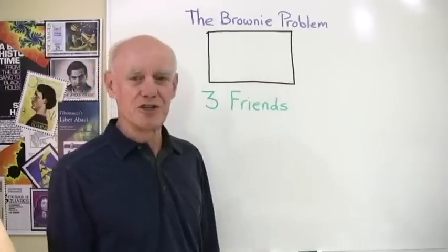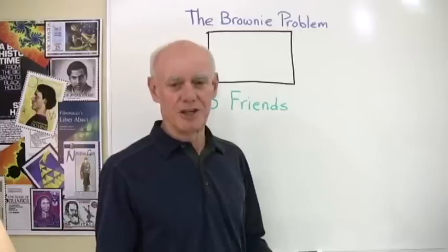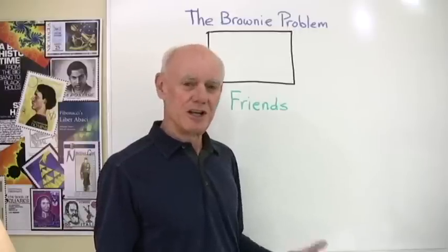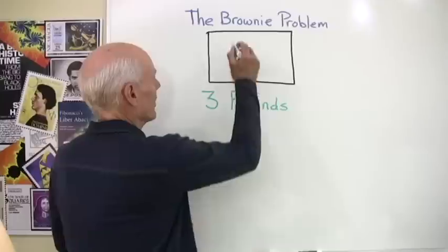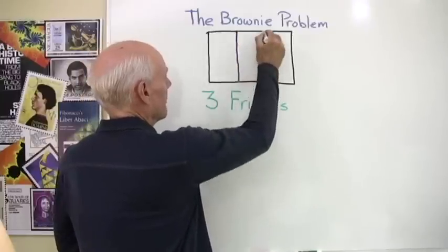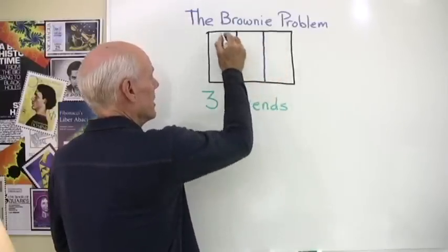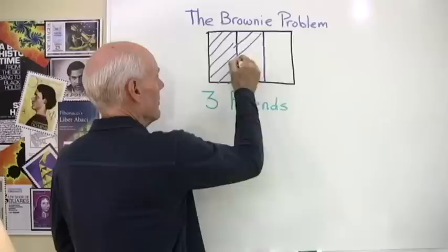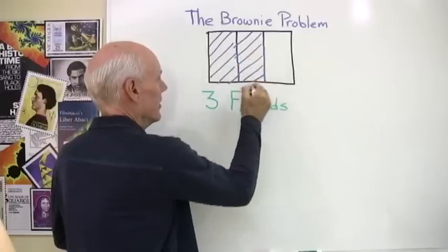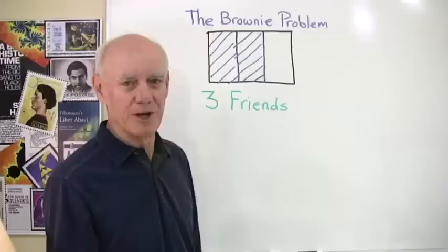Then the third friend still doesn't show up, so they say to themselves, look, let's divide this up into thirds. Each of us will eat one-third and we'll leave one-third for the person when they get here. So they go ahead and divide the pan of brownies up into thirds, and each of them eats one-third of the pan of brownies, and then they leave a third for their third friend that hasn't shown up yet.